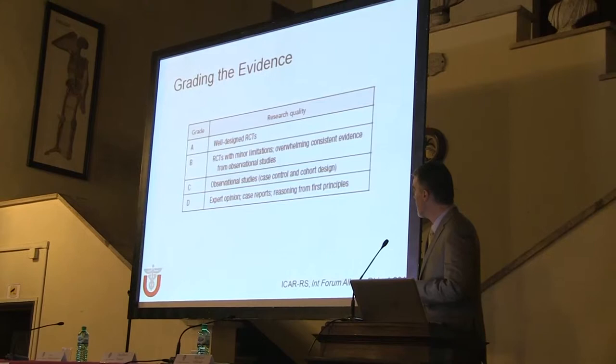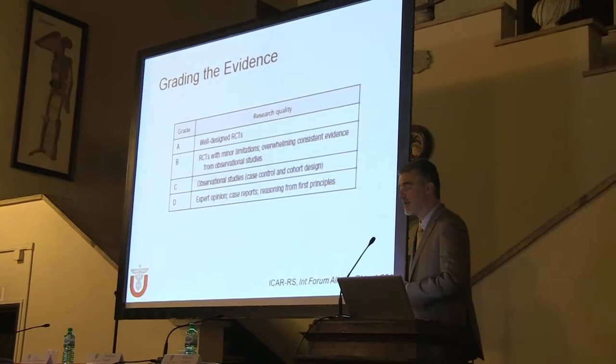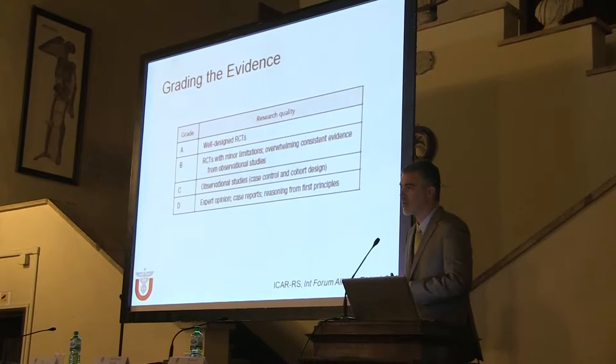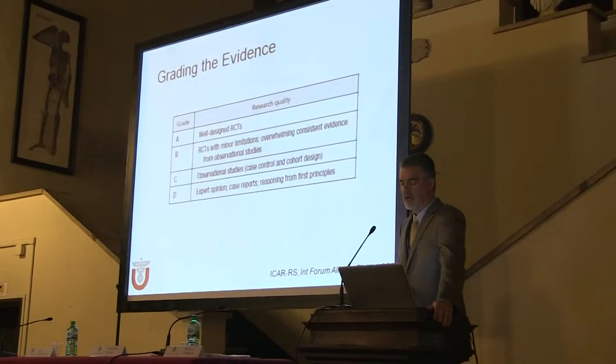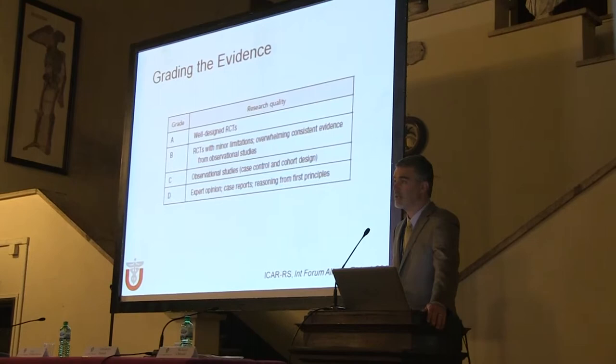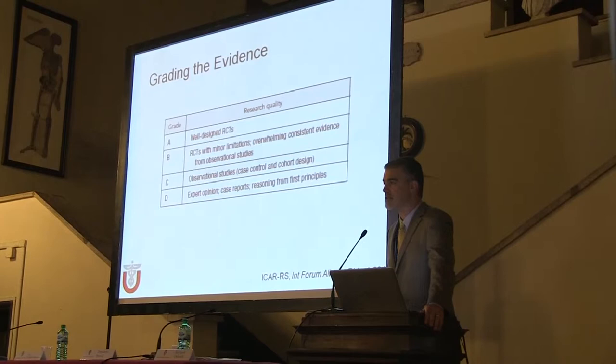Evidence was graded with letter grades: A for well-designed multiple randomized controlled trials, B for poorly performed or problematic randomized controlled trials, C for observational studies, and D for expert opinion, case reports, and reasoning from basic science.